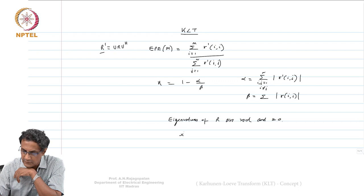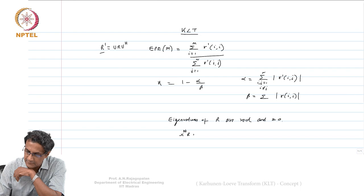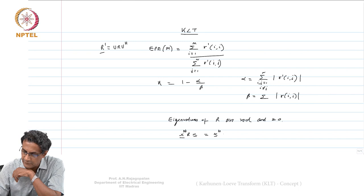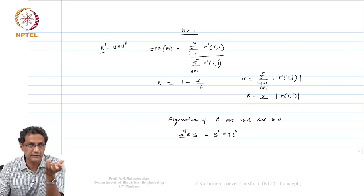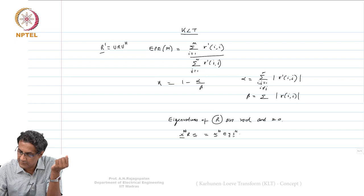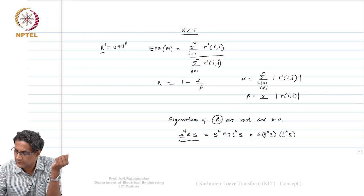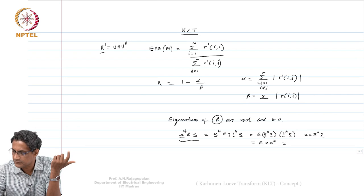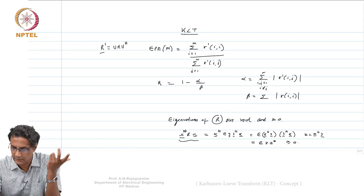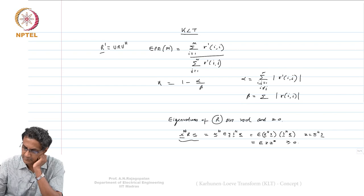If you take any non-zero x and compute x-Hermitian R x, given that R has the form expectation of y y-Hermitian — because it is a covariance matrix — then x-Hermitian R x becomes x-Hermitian y times y-Hermitian x. If you call z = x-Hermitian y, this equals z times z-star, which is |z|^2, always greater than or equal to 0.